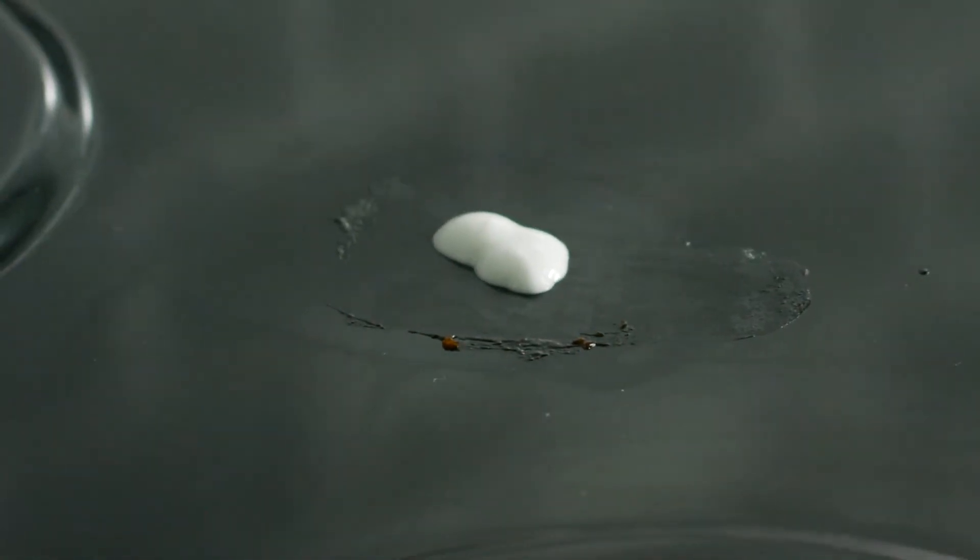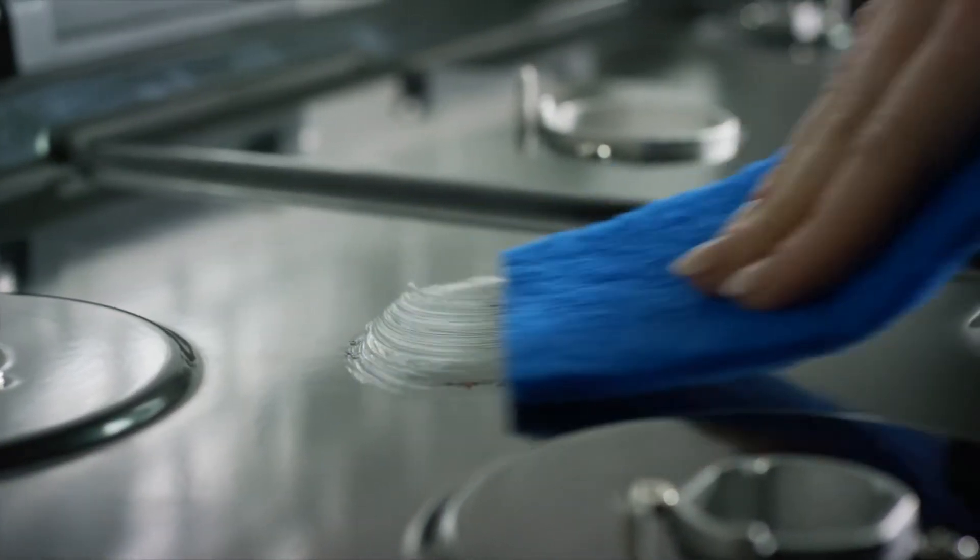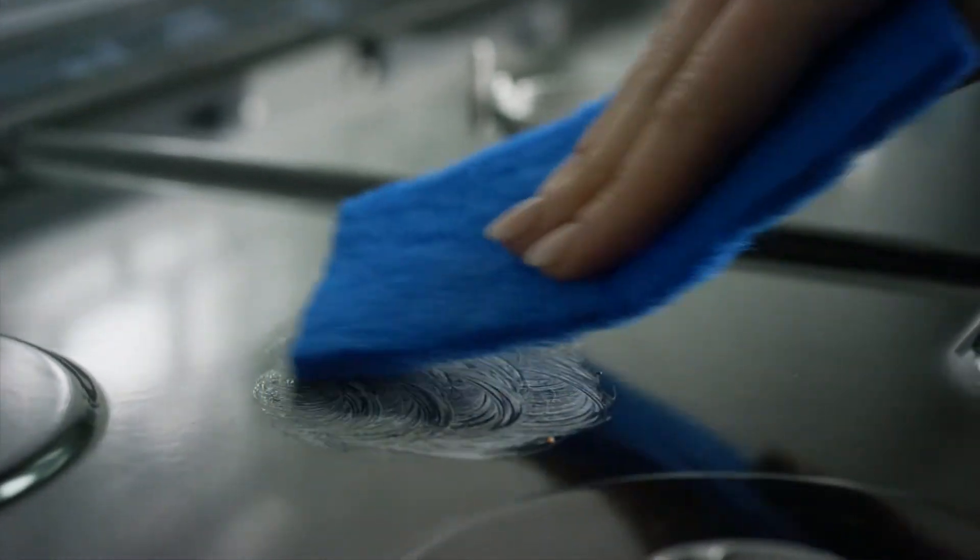If using a fresh cooktop cleaner, apply a few dime-sized drops to the affected areas. Rub the fresh cleaner onto the cooktop surface with the cooktop scrubbing pad. Repeat as necessary for stubborn or burned-on stains.